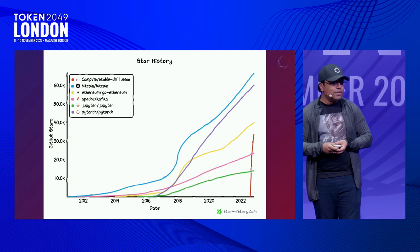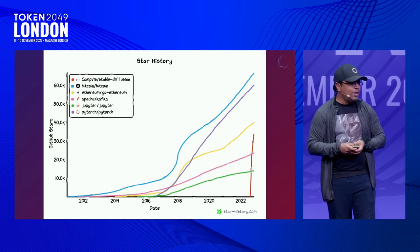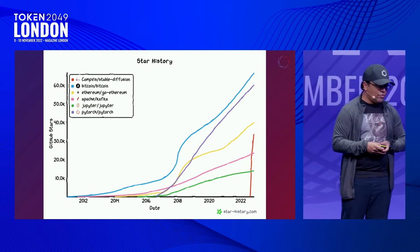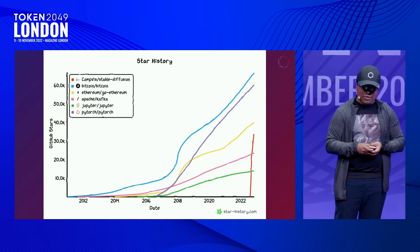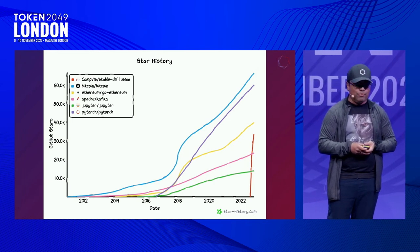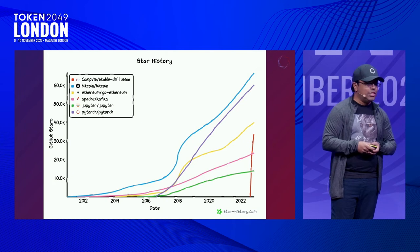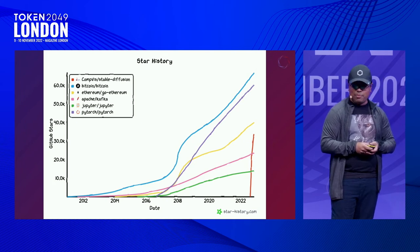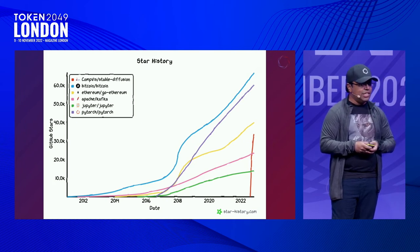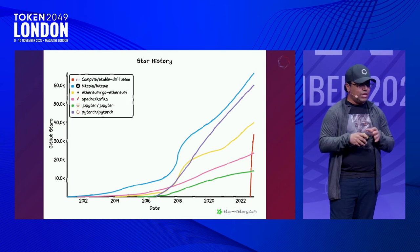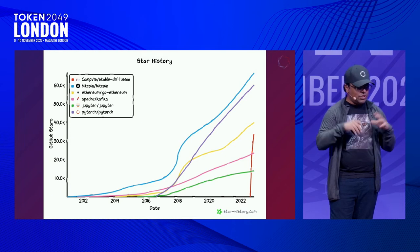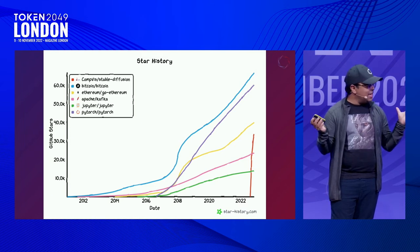And that is our GitHub. In two months, we've got half the stars of Bitcoin, and we're heading towards Ethereum. That shows you the developer pick-up here, and I think it's going to continue. As everyone gets together and builds cool things, it's going to be a bit insane.